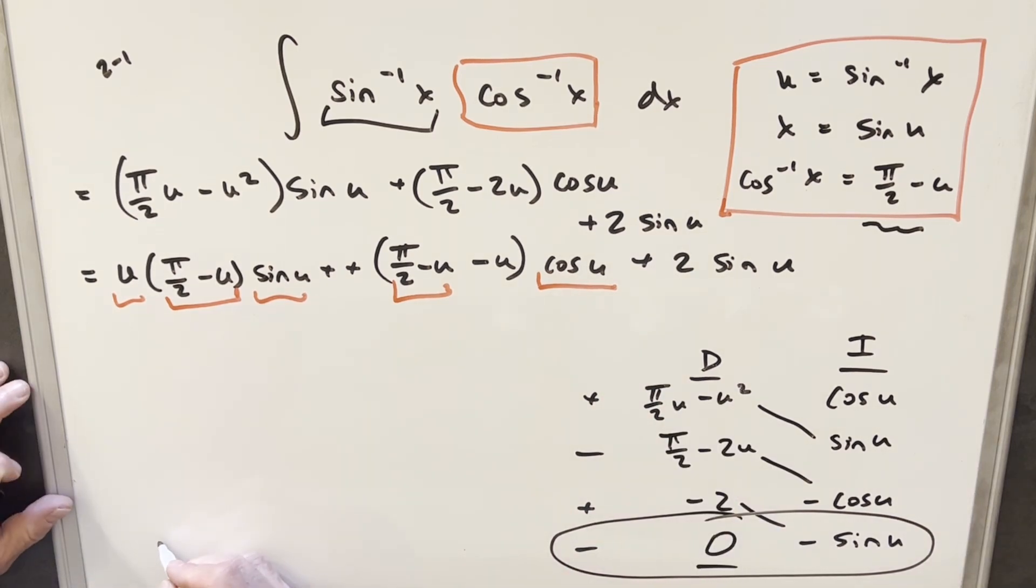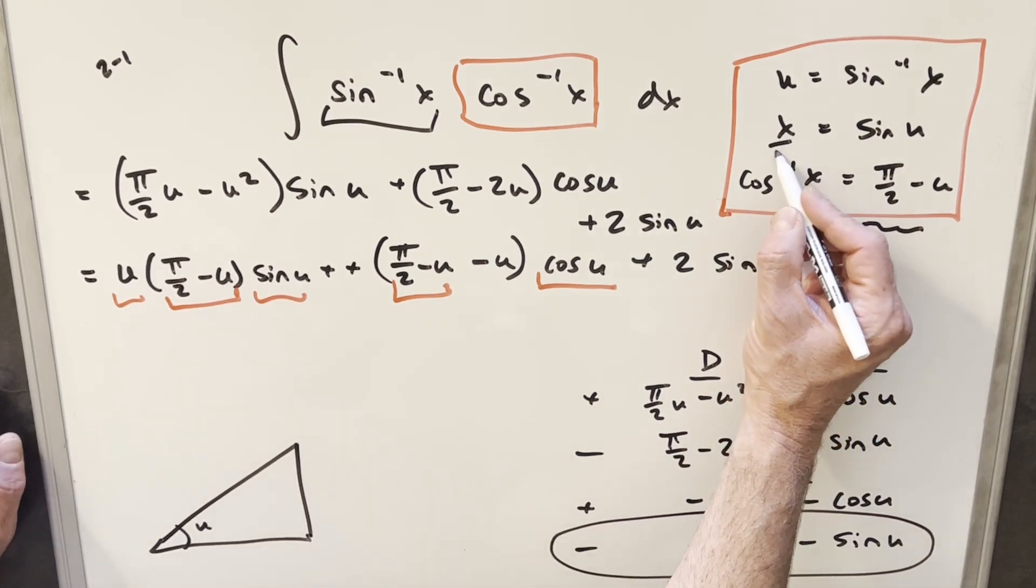In order to get this value, I could just draw my right triangle because we know we have sine u to work with. So if our angle's u and sine u is going to be x, we can write this as x over 1.